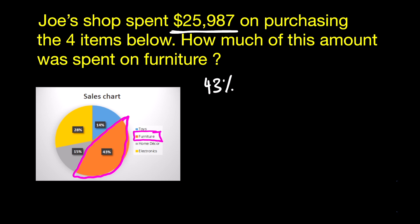43% in decimals would be 0.43, and you want to multiply this by the total amount spent, which was $25,987. That's going to give you how much of that amount was spent on furniture.